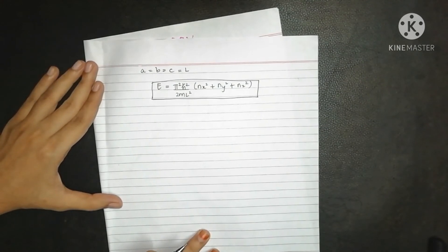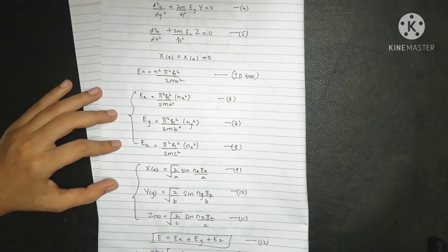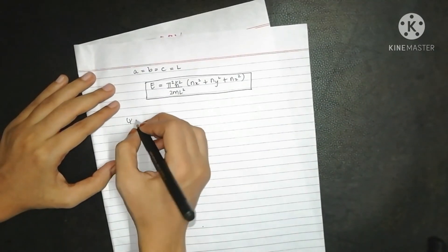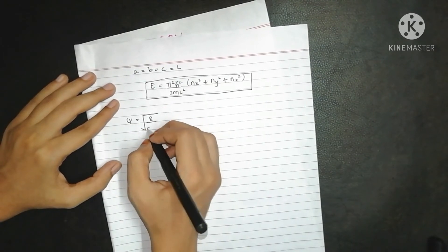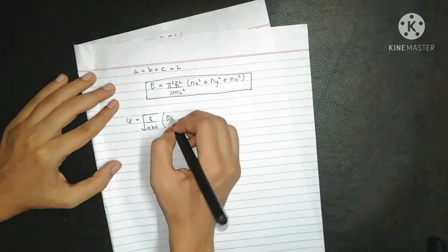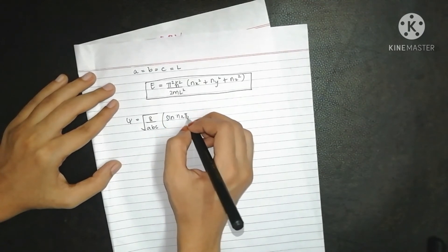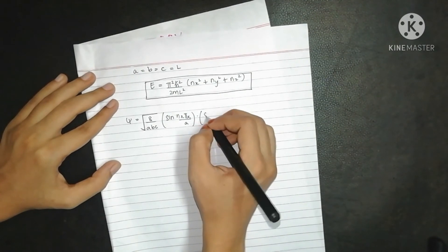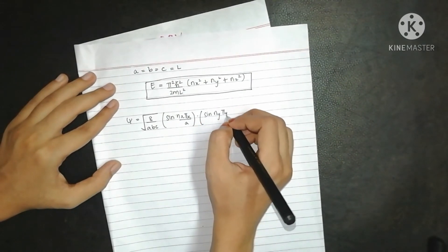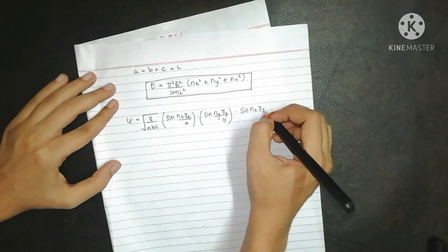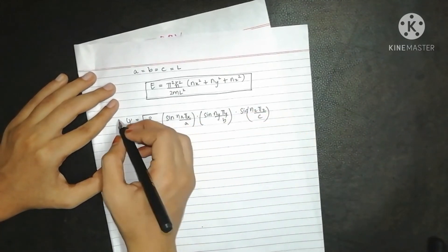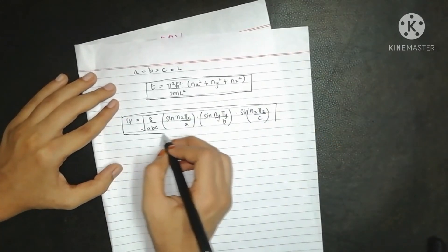For the wave function psi, combining equations 9, 10, and 11, the full wave function is: psi = √(8/abc)·sin(nx·π·x/a)·sin(ny·π·y/b)·sin(nz·π·z/c). The wave function outside the box is zero.